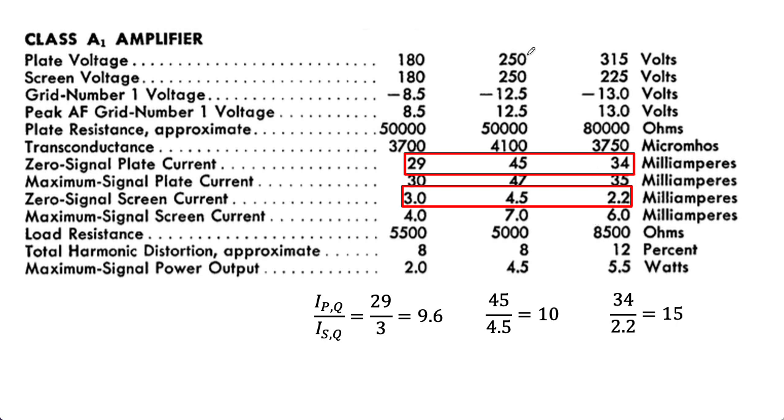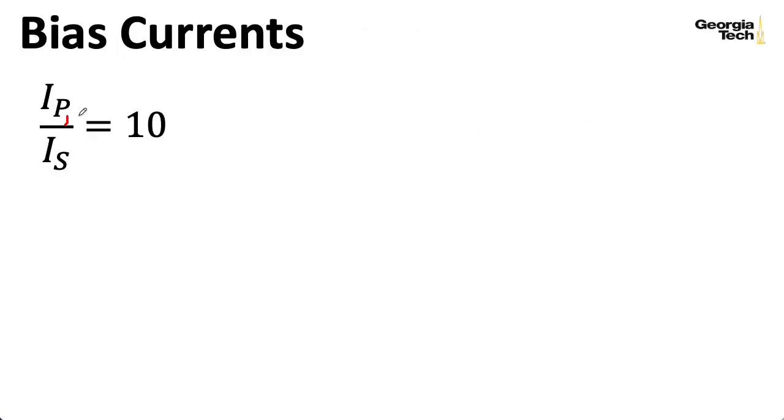Now in our particular case, we have a plate to cathode voltage of 286 volts. The closest thing we have here is 250 volts. So I'm going to use this IP over IS value of 10 in some of my calculations, but I'll come back to this point and fudge things a little bit later. So normally I would write a comma q here and a comma q here, but that gets a little tedious, so I'm going to suppress that kind of notation on the slide.